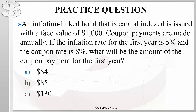Now let's take a look at this practice question. An inflation-linked bond that is capital indexed is issued with a face value of $1,000. Coupon payments are made annually. If the inflation rate for the first year is 5% and the coupon rate is 8%, what will be the amount of the coupon payment for the first year?